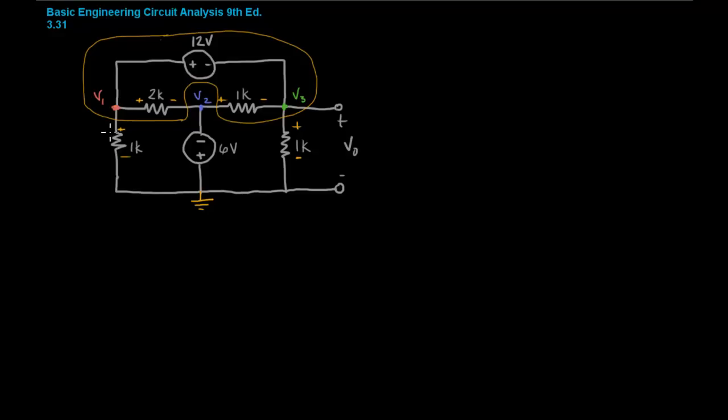So now let's look at the currents going in and out of that node. Okay, so here we have a current going this way. Here we have a current going that way. And here we have a current going that way. And that's all of the current flowing through that node.